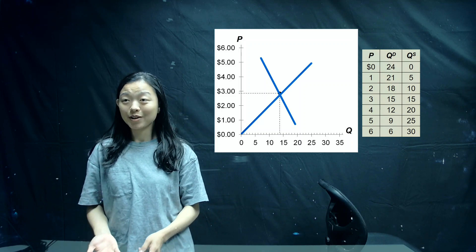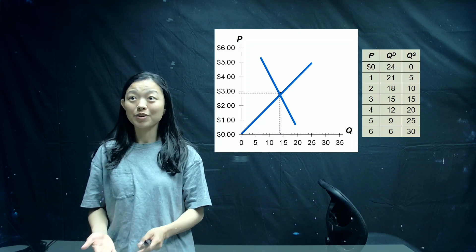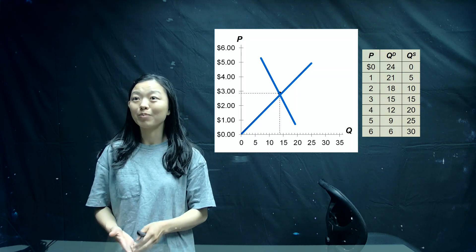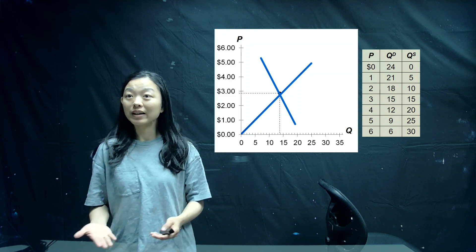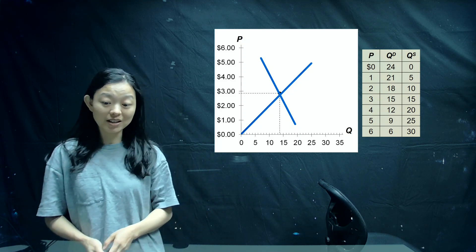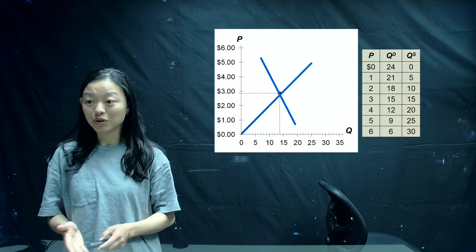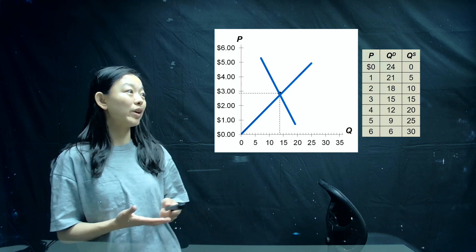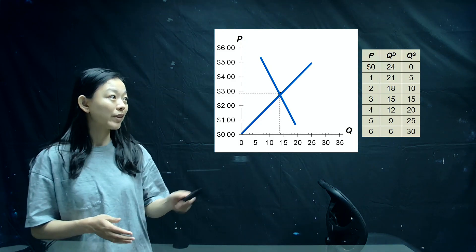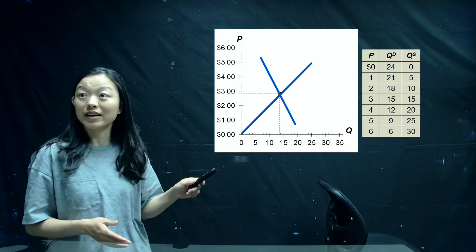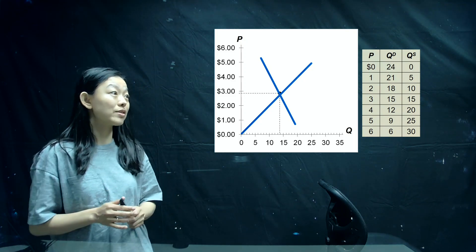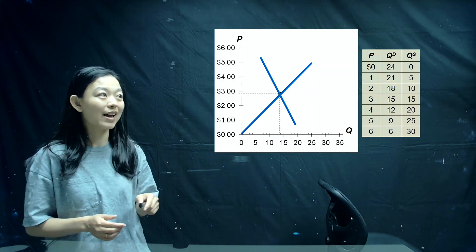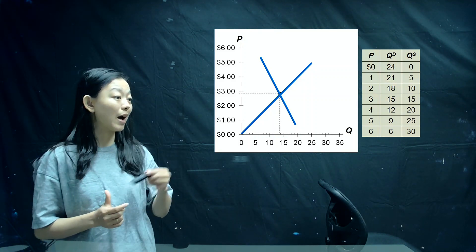Hello, ECON201 students. Today we would like to continue the second part of chapter 4, talking about market equilibrium. Once we learn the demand and supply, it will be easier for us to know how to get a market equilibrium. From this graph, you can notice we have the quantity on the horizontal axis and price on the vertical axis, demand curve downward sloping, and supply curve upward trend.